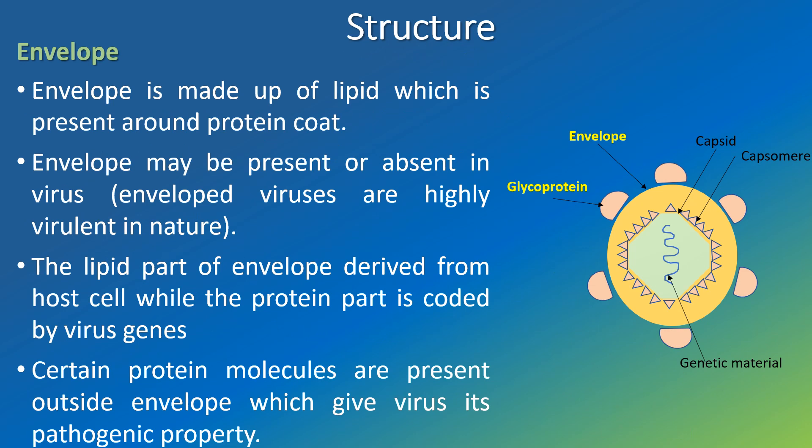Envelope: the envelope is made up of lipid, which is present around the protein coat. The envelope may be present or absent in a virus. Enveloped viruses are highly virulent in nature — virulent means they are infectious. The lipid part of the envelope is derived from the host cell, while the protein part is coded by virus genes. Certain protein molecules are present outside the envelope, which give the virus its pathogenic property — pathogenic means they are capable of causing disease.